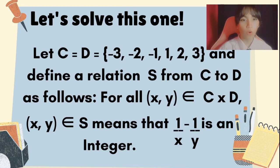For all elements of C times D, X and Y are elements of S, meaning that 1 over X minus 1 over Y is an integer.